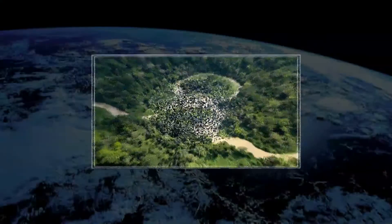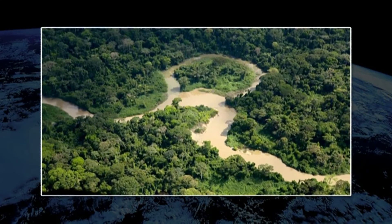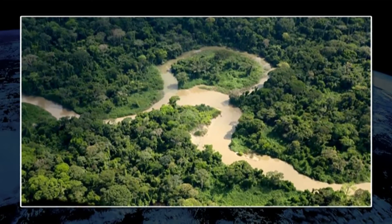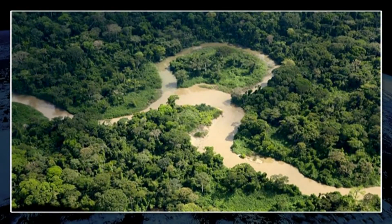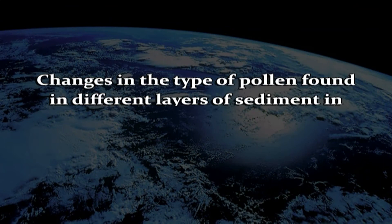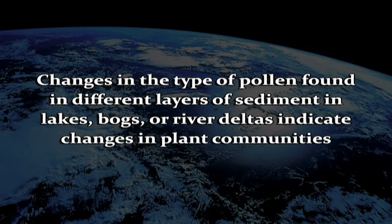Climate change devastated the tropical rainforests abruptly, fragmenting the habitat into isolated islands and causing the extinction of many plant and animal species. Changes in the type of pollen found in different layers of sediment in lakes, bogs or river deltas indicate changes in plant communities. These changes are often a sign of a change in climate.